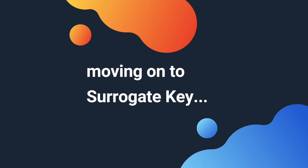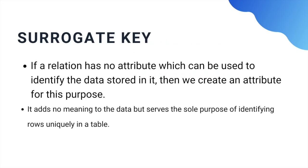Moving on to the surrogate key — sometimes a relation or table has no attribute which can uniquely identify the rows. In this situation, when there is no natural primary key, we create an attribute to act as a primary key — that is a surrogate key. These keys do not add any meaning to the data but serve the sole purpose of identifying the data.